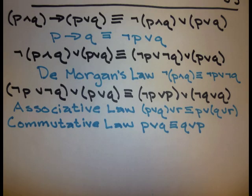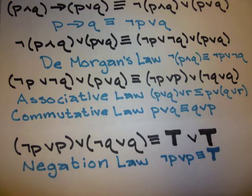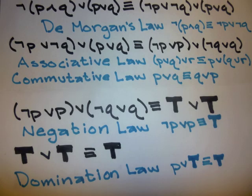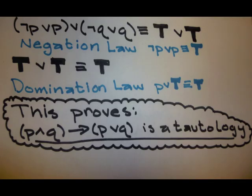Using the associative law and the commutative law, the result is (not P or P) or (not Q or Q). The negation law shows that not P or P always evaluates to true. Thus (not P or P) or (not Q or Q) is true or true. The domination law shows that true or true is equivalent to true. This shows that since the original expression evaluates to true using the negation law and the domination law, (P and Q) then (P or Q) is a tautology — it is always true.